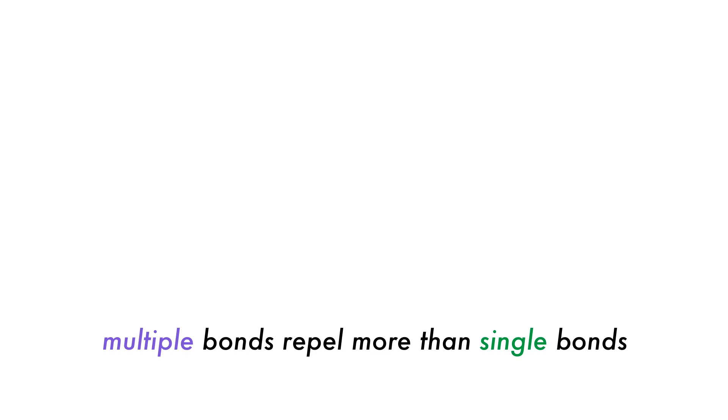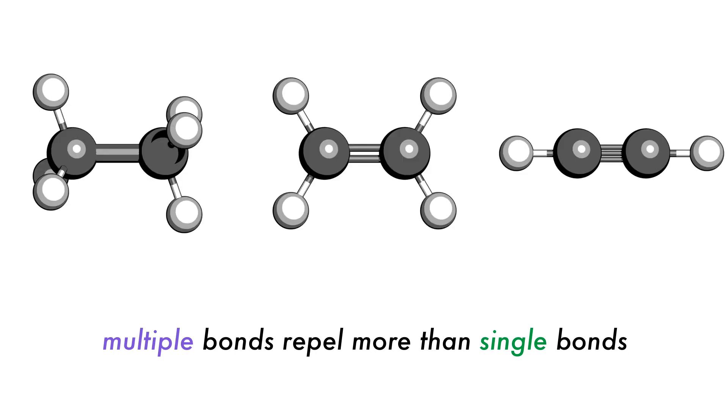The final empirical VSEPR rule that we encountered was that multiple bonds repel more than single bonds. We can see this experimentally in the C2 family of alkanes, alkenes and alkynes. The bond angles increased from 111.2 degrees for single bonds up to 180 degrees for triple bonds.